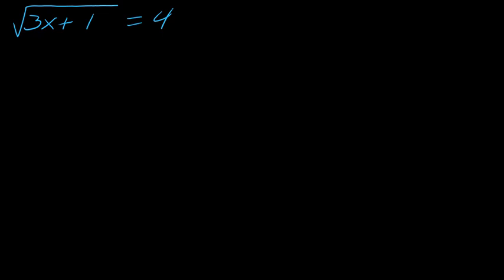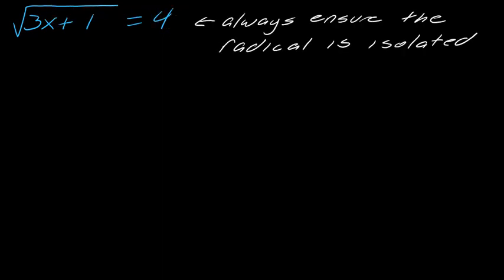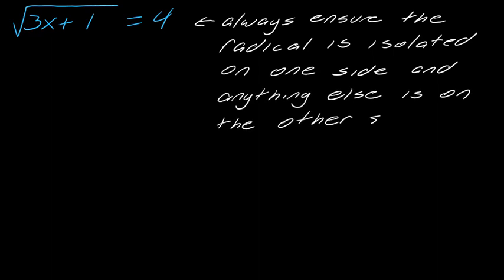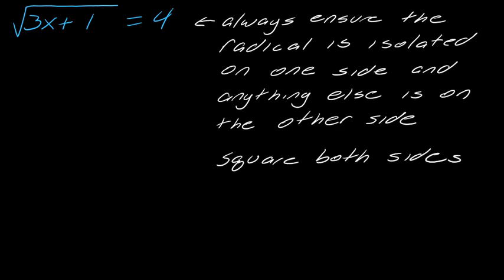In general, when you have something set up like this, there are a couple of basic things you want. You want to have the radical isolated on one side and everything else isolated on the other side. And so since we have that here, then what you want to do is square both sides. When you square a radical, that will cancel out the whole radical. So this just gives me 3x plus 1, and then 4 squared is 16.